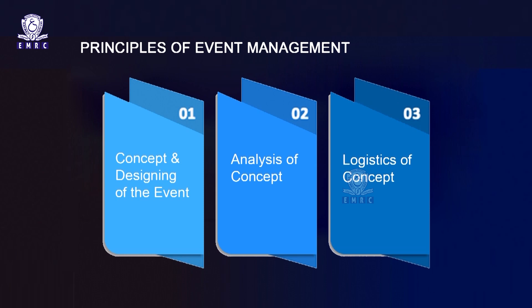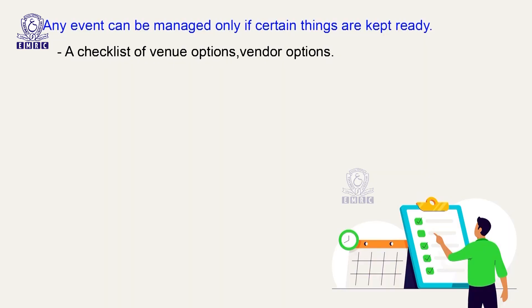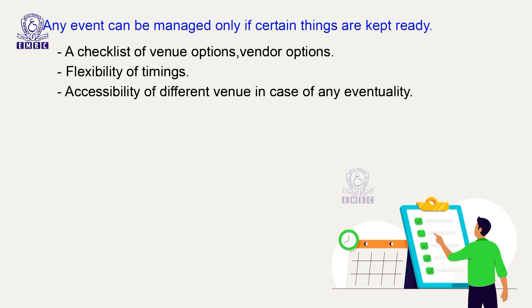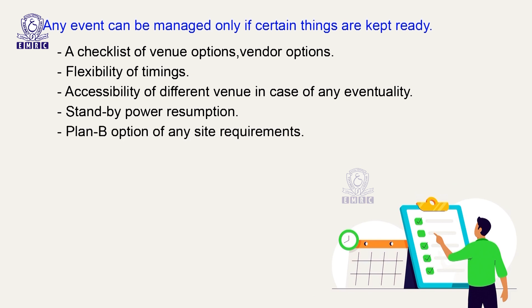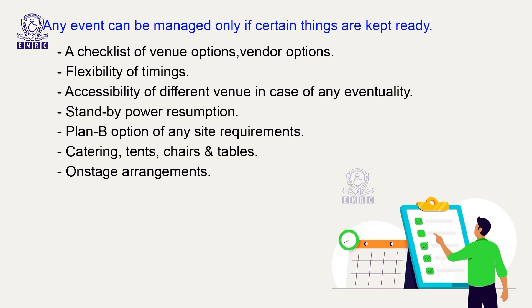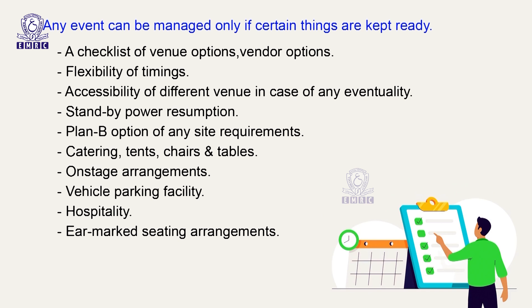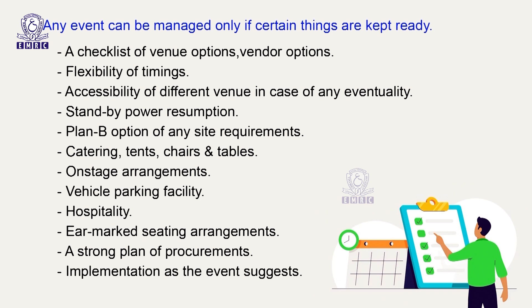The third aspect is logistics of the concept. Any event can be managed only if certain things are kept ready: a checklist of venue options, vendor options, flexibility of timings, accessibility of different venues in case of eventuality, standby power resumption, plan B option for site requirements, catering, tents, chairs and tables, on-stage arrangements, vehicle parking facility, hospitality, earmarked seating arrangements, and a strong plan of procurements and implementation as the event requires.